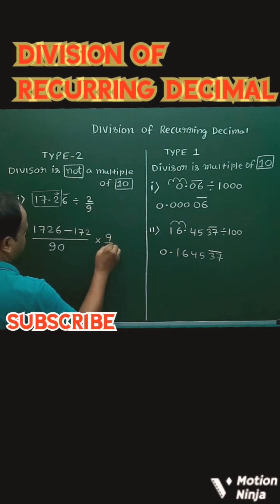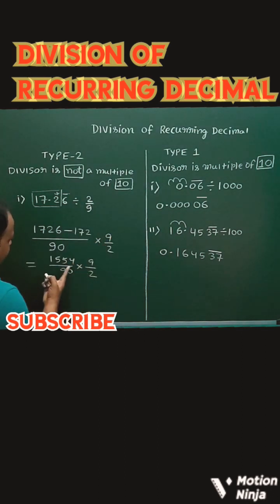Divide by 9. On simplification we get 1554 by 90 into 9 by 10. At last we get 77.40.